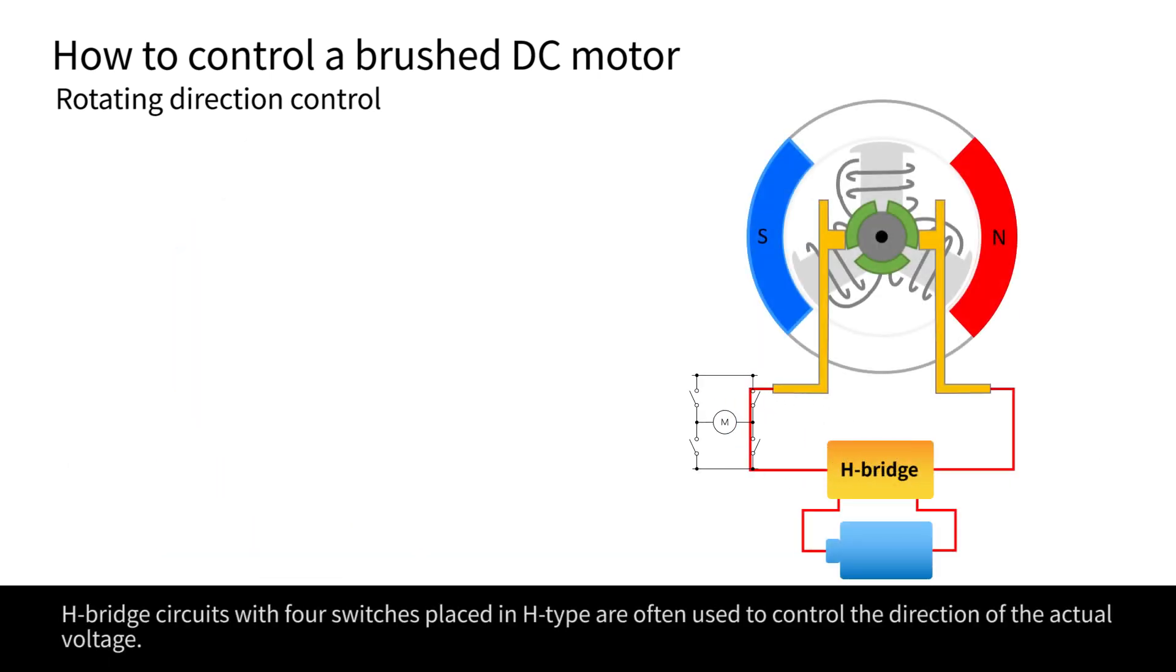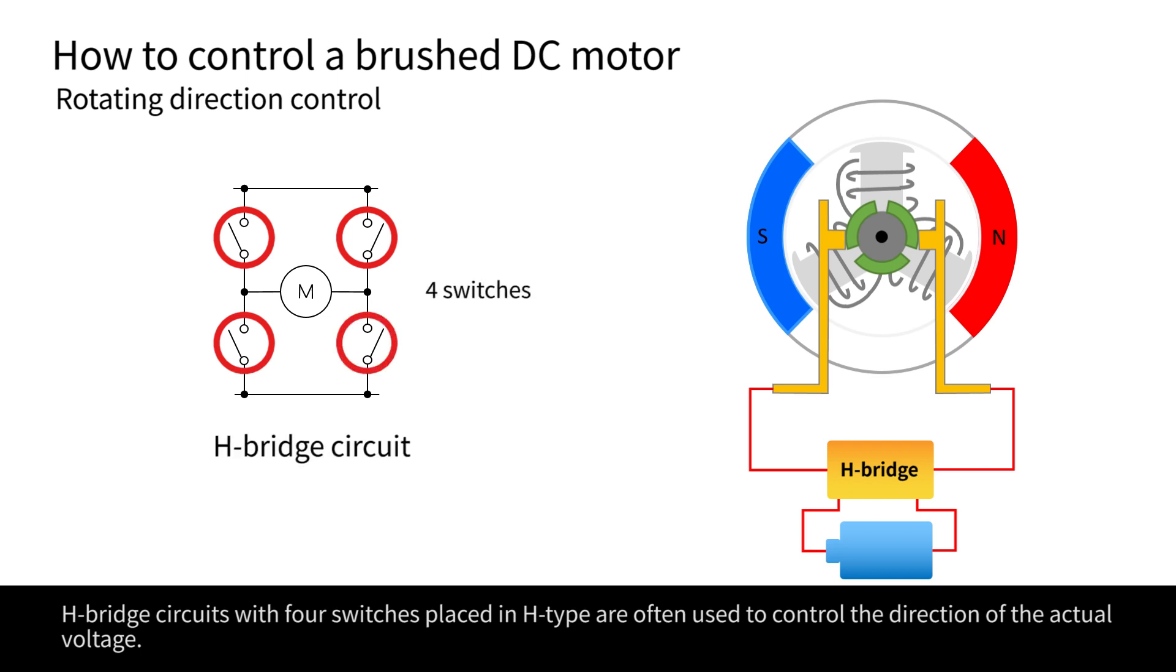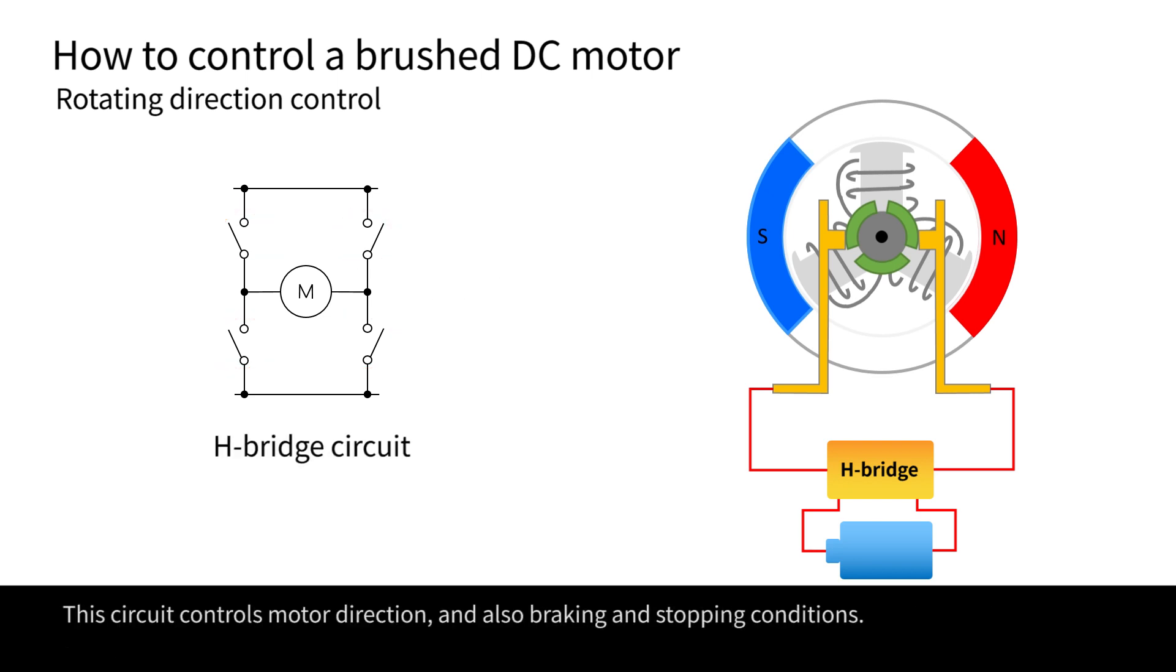H-bridge circuits with four switches placed in H-type are often used to control the direction of the actual voltage. This circuit controls motor direction, and also braking and stopping conditions.